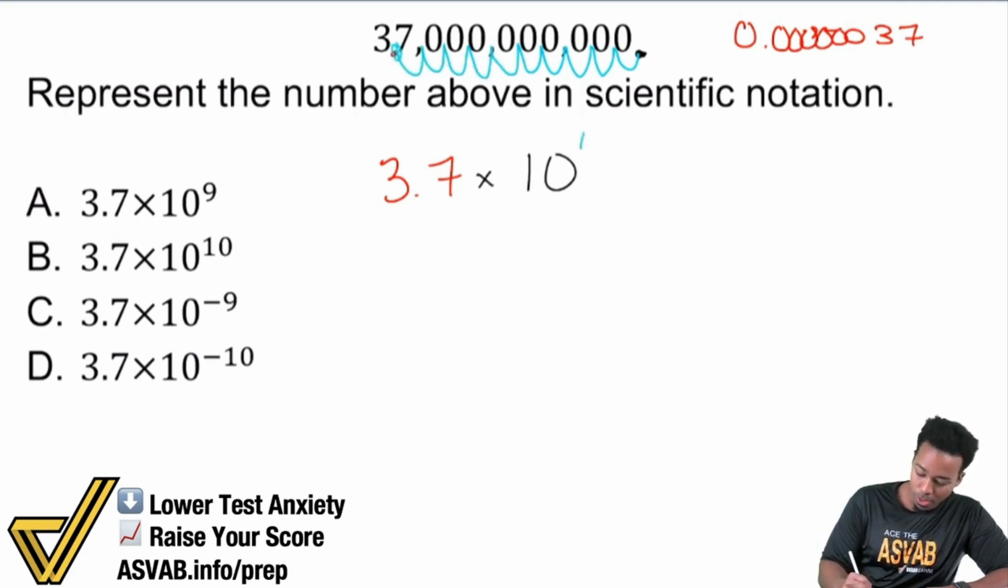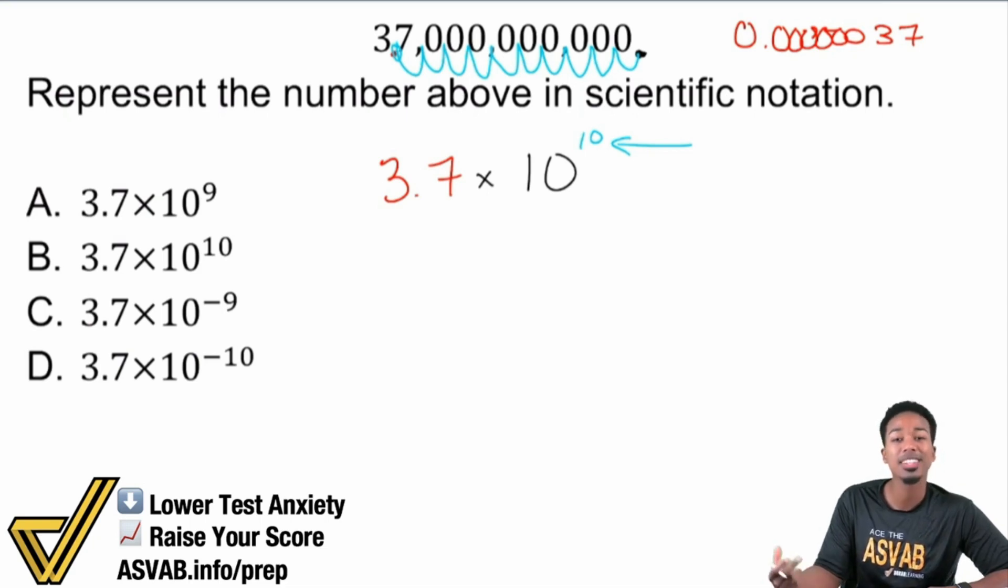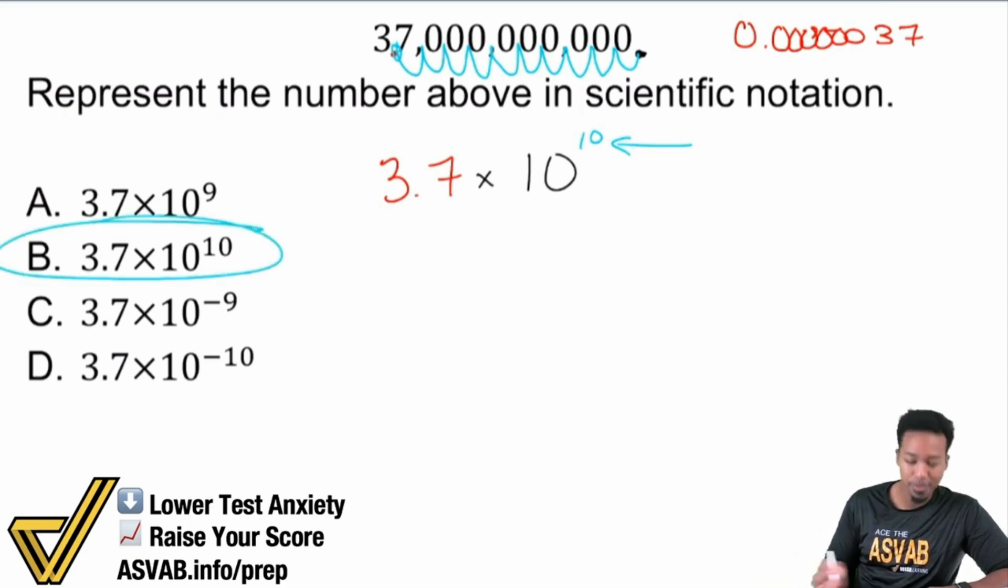So it's going to be 3.7 times 10 to the power of 10. That tells you, that 10 right there tells you how many times you're moving the decimal place over. And because it's positive, it's a big number. That's why the answer is B.